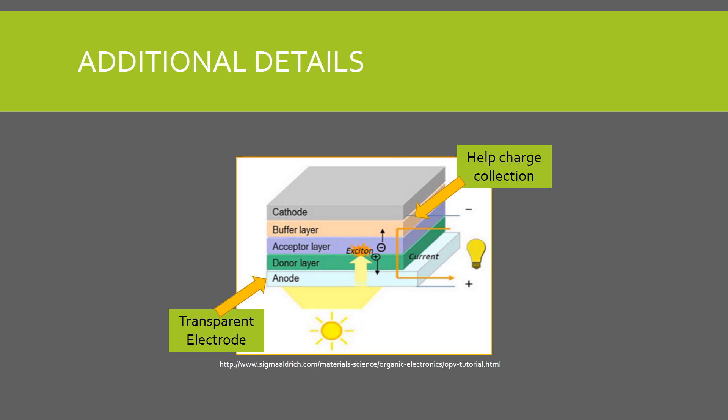There are a few additional components that organic cells have. OPVs generally have a transparent electrode, rather than a grid-like one, to allow light into the active layer. Also, organic cells generally have buffer layers between the active layer and electrodes to promote charge collection and extraction.